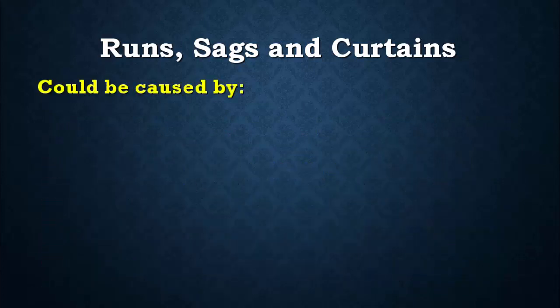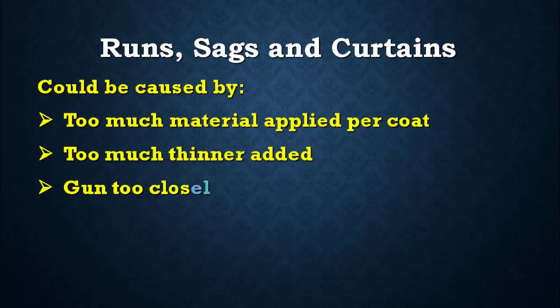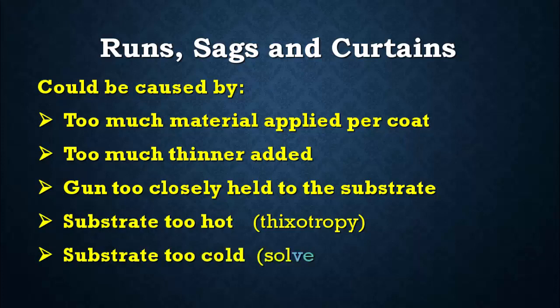These defects could be caused by too much material applied per coat, too much thinner added, the gun held too closely to the substrate, the substrate being too hot causing thixotropy, or the substrate being too cold affecting solvent evaporation.